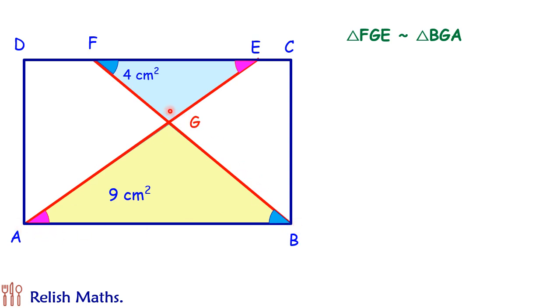By similar triangle theorem, the area of the triangles is equal to square of any of the three sides. So here if I will take FE and AB as the sides, then this area will be equal to FE upon AB whole square. To solve this we will put the value of FGE area as 4 and BGA as 9. So this is 4 upon 9. Solving it we'll get FE upon BA is nothing but 2 by 3.